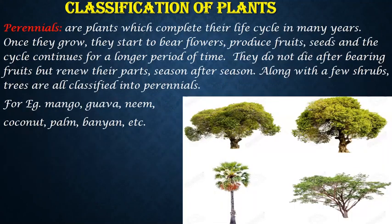Perennials are plants which complete their life cycle in many years. Once they grow, they start to bear flowers, produce fruits and seeds, and the cycle continues for a longer period of time. They do not die after bearing fruits but renew their parts season after season. Along with a few shrubs, trees are also classified into perennials. Common examples are mango, guava, neem, coconut, palm, banyan, gulmohar, etc.